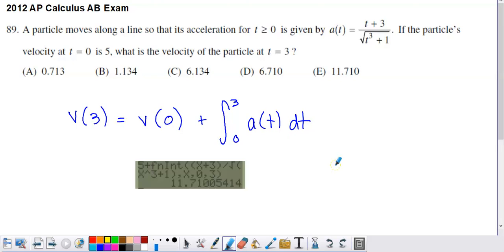So talking about a particle moving along a line and its acceleration is given for positive values of time by this function a of t. If the particle's velocity at time 0 is 5, what is the velocity of the particle at time 3?